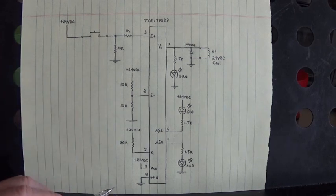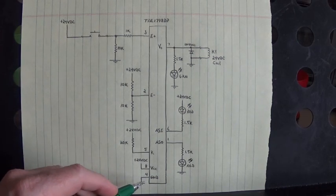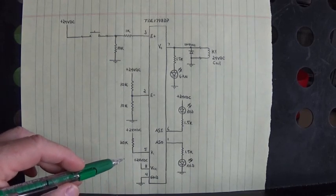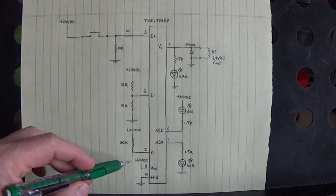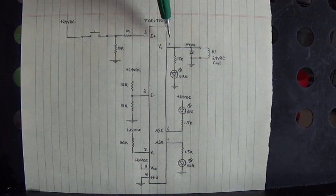Down here, pin 8 is VCC and pin 4 is ground. I'm powering up this IC with an external power supply set to plus 24 volts DC. Here's the output on pin 7, I've got a 24 volt DC relay.